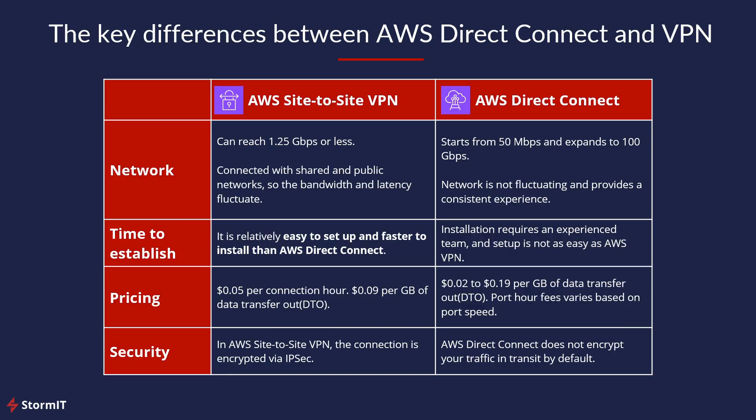So what is the key difference between these two services? AWS Site-to-Site VPN can reach around one gigabit per second. With AWS Direct Connect, you can reach 100 gigabits per second — it will not be easy, but you are definitely able to do it. For AWS Site-to-Site VPN, you will use the public network, so the internet's latency can fluctuate. When you use AWS Direct Connect, you create a dedicated line, so it should provide a consistent experience.